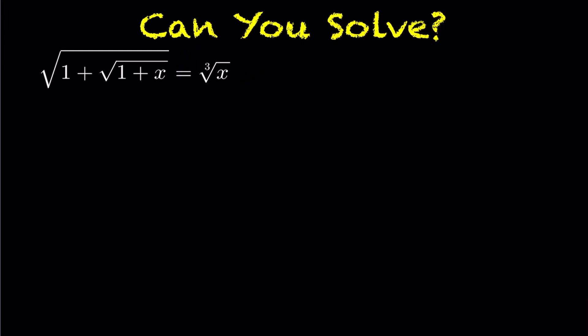We're going to go ahead and raise both sides of this equation to the power of six. On the left hand side, which was to the power of a half, raising to the power of six gives us a power of three, and likewise we get a power of two on the right hand side.